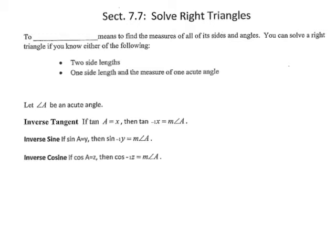This is section 7.7, which means we're almost done with chapter 7. Section 7.7 is a culmination of everything we've learned in chapter 7. We're going to use the Pythagorean Theorem, sine, tangent, cosine, and we're going to learn inverse tangent, inverse sine, and inverse cosine. We're going to find all the sides and all the angles of a right triangle.